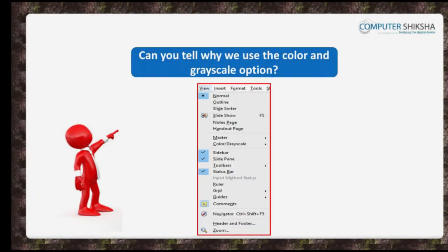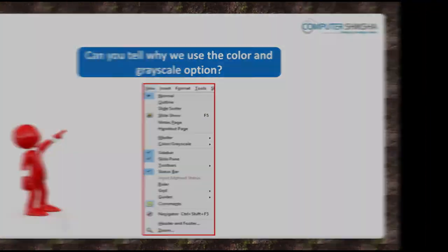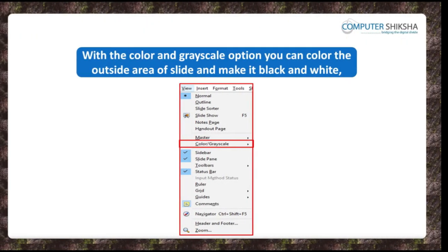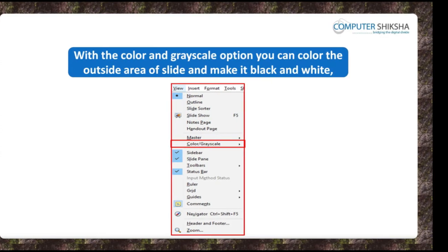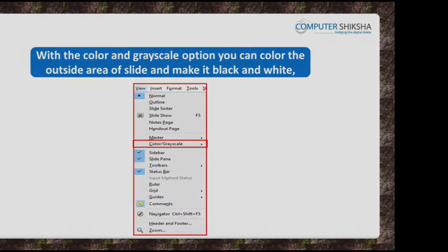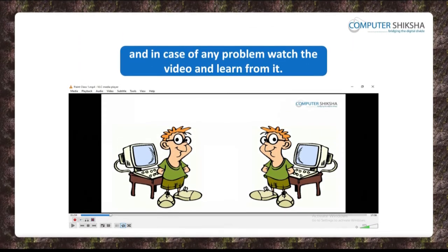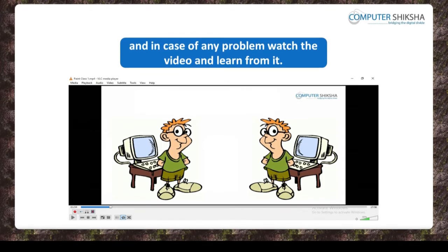Can you tell why we use the Color and Grayscale option? With the Color and Grayscale option, you can view the outside area of your slide in color or make it black and white. Let us learn from this video how the Color and Grayscale options are used.